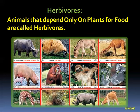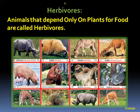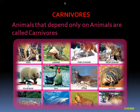So these are herbivores — animals that depend only on plants for their food. They are called herbivore animals. They eat plants and plant products. Can you see the picture children? Buffalo eats grass and fodder. Sheep eats grass. Donkey eats grass. Camel eats leaves and grass. Pig also eats grass, fruits, and vegetables.